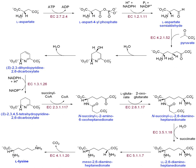These elements create monomers, the building blocks for macromolecules. Some important biological macromolecules include proteins, which are composed of amino acid monomers joined via peptide bonds, and DNA molecules, which are composed of nucleotides joined via phosphodiester bonds.